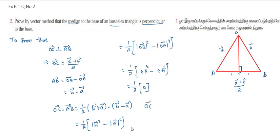Therefore, OC vector dot AB vector equals zero. This means OC vector is perpendicular to AB vector. This completes our proof. Thank you for watching.